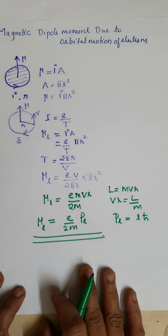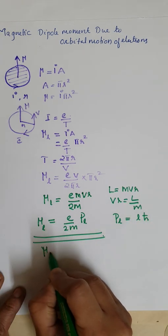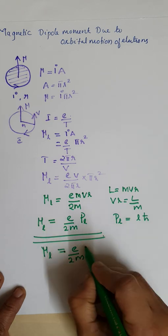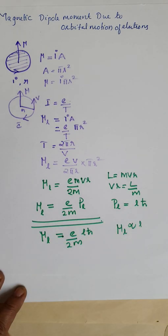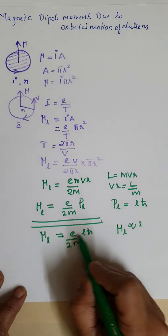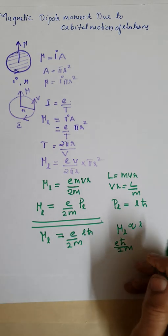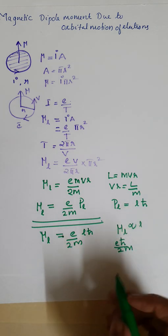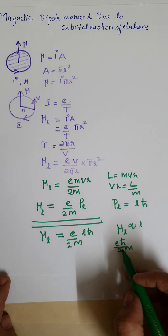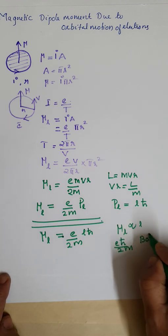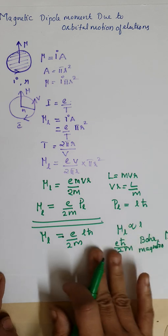So we can represent mu L equal to E divided by 2M into L h-bar, meaning mu L is proportional to L. The constant term E h-bar divided by 2M is the smallest unit of magnetic dipole moment, and this is called the Bohr magneton, represented as mu B.